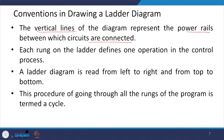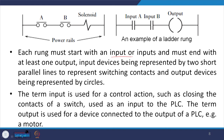Here are the conventions for drawing a ladder diagram. The vertical lines of the diagram represent the power rails between which the circuits are connected. Each rung on the ladder defines one operation in the control process. The ladder diagram is read from left to right and from top to bottom. Going through all the rungs of the program is termed a cycle. Each rung must start with an input or inputs and must end with at least one output.